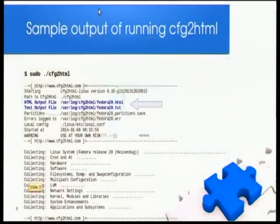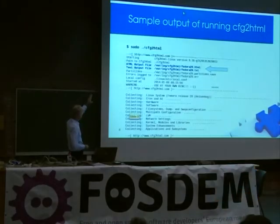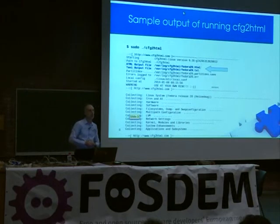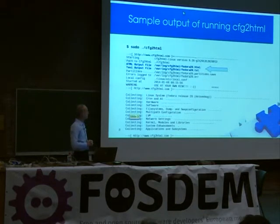Here you can see a very simple sample. On top you can see the HTML output file and the text output file and where they are stored. For Linux, by default it's under the /var/log directory, but you can change it — you can overrule it on the command line or in the local.config file. It tells you when it starts and what it is collecting. Of course, this is only a small screenshot — it can be 10K lines long. I don't want to run it here; it's up to you to try it out.